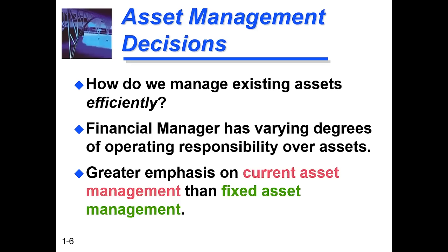Current asset management — we can take more output from current assets. For example, cash in our account, receivable accounts, and inventory — we can take more and more output from these. Instead, we can take less flexibility from fixed assets like land and building. The current assets in the firm should be managed best so that our output will be good, and our business and firm will work well.